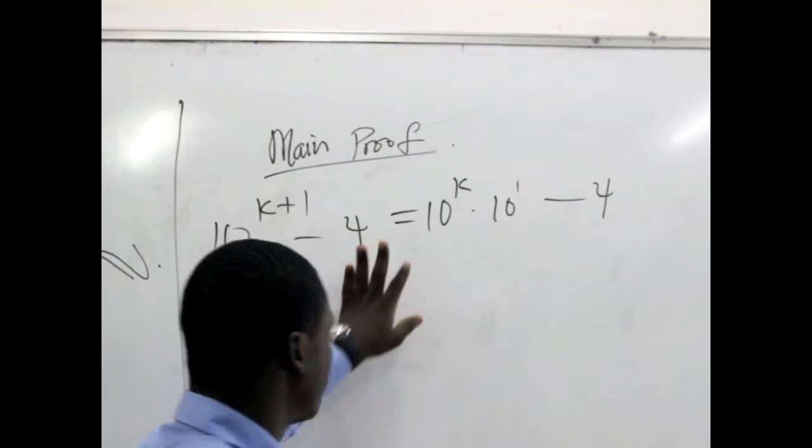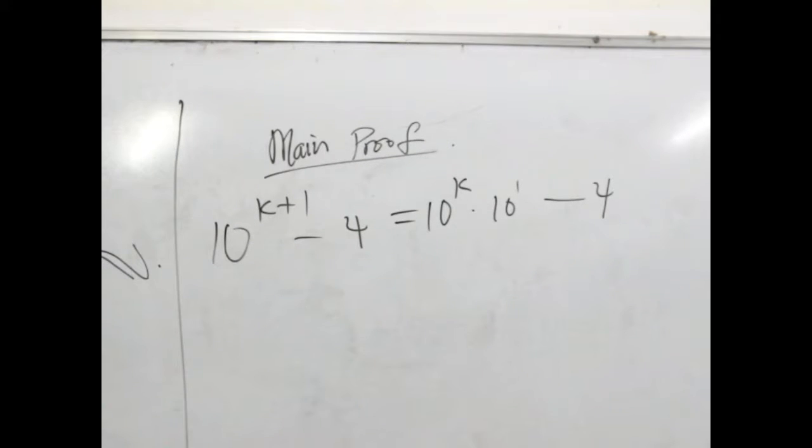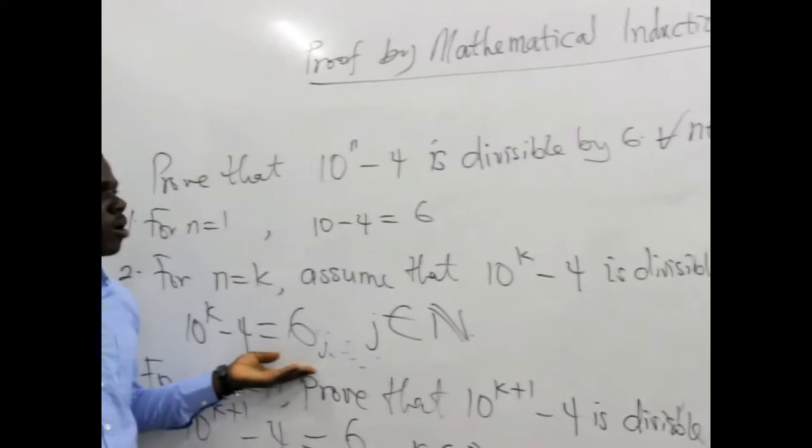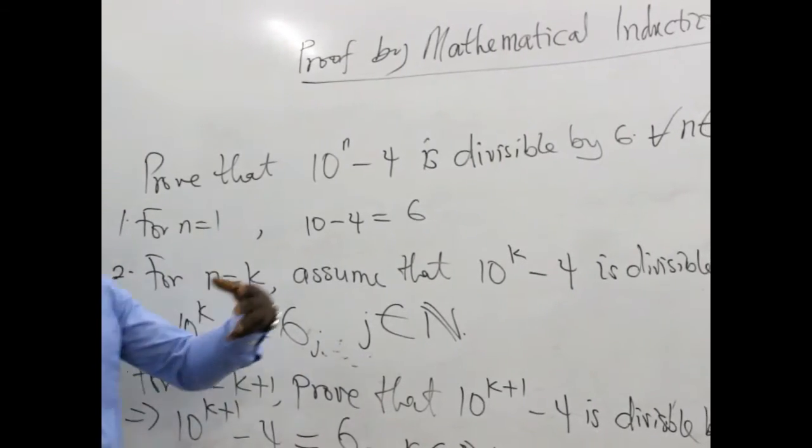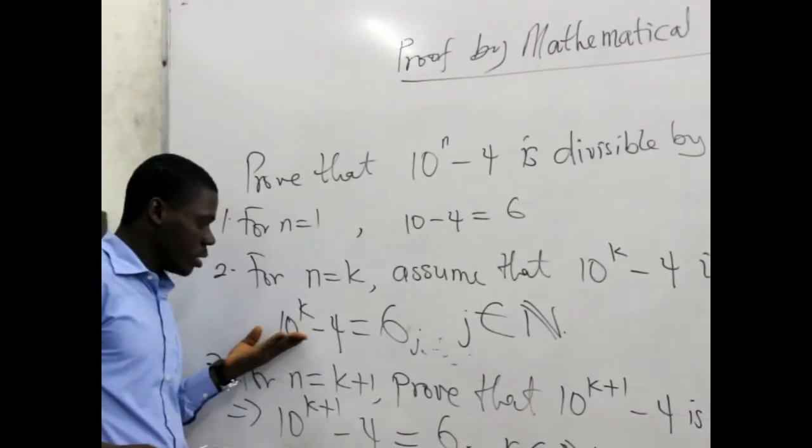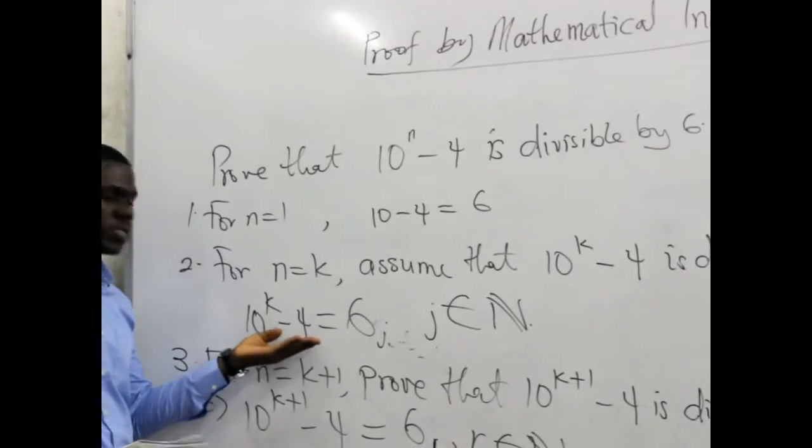Remember to actually prove this we need to bear in mind our assumption at this stage. We are saying that for n equals k we are assuming that this one is divisible by 6.